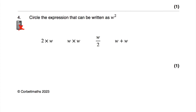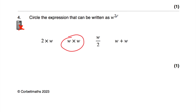Question number four says: circle the expression that can be written as w squared. To square something, you multiply it by itself, so w squared means w times w. Two times w is not w multiplied by itself. w times w — yes, that's w multiplied by itself. w divided by two is half of w, not w times itself. And w plus w would be two lots of w, or 2w — not w squared. Whenever we're squaring something, we're multiplying by itself, so the answer is w times w.